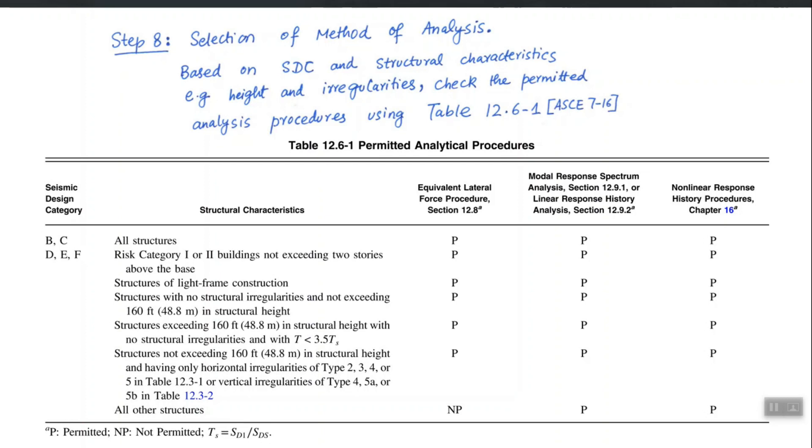UBC 97 had a concept called occupancy category and based on that occupancy category, the importance factor was decided. In IBC series of building codes, we have risk category and importance factor is now the function of that risk category. Now, risk category alone is not a direct substitute of that occupancy category.